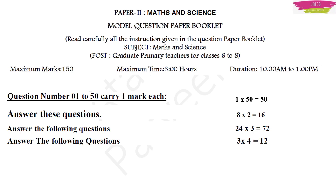In your question paper, you will have 50 questions carrying 1 mark each. Then there will be 8 questions each carrying 2 marks, so total will be 16 marks. Then it will be followed by 24 questions, each carrying 3 marks, so total marks for these questions will be 72 marks. And at the last, there are 3 questions which are 4-mark questions, each carrying 4 marks, so total marks allotted for these 3 questions are 12.